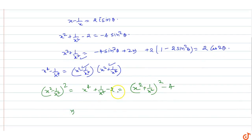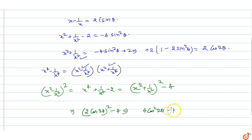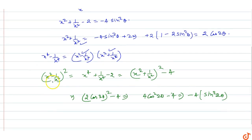Since x² + 1/x² = 2cos2θ, we have (2cos2θ)² - 4 = 4cos²2θ - 4 = 4(cos²2θ - 1) = -4sin²2θ. Taking the square root, x² - 1/x² = 2i·sin2θ.